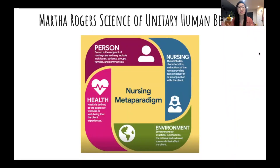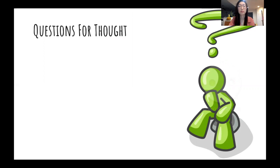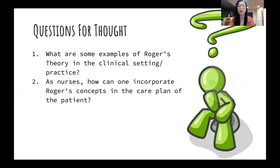Here is a visual representation of an overview of the theory. The nursing metaparadigm encompasses person, nursing, environment, and health, which all affect us as a unit. The person is the recipient of nursing care and may include individuals, patients, groups, families, and communities. Nursing describes the attributes, characteristics, and actions of the nurse providing care on behalf of the individual. Environment is defined as the internal and external surroundings that affect the client. And lastly, health is defined as the degree of wellness of the well-being the client experiences. Discussion questions include: what are some examples of Rogers' theory in the clinical setting? How can nurses incorporate Rogers' concepts in the care plan of the patient? And is Rogers' theory still relevant today?